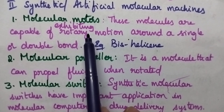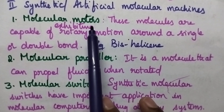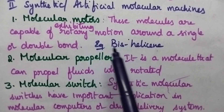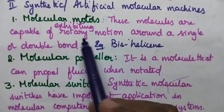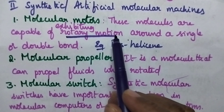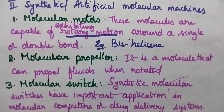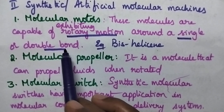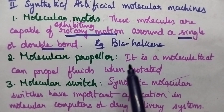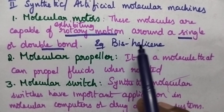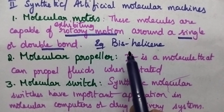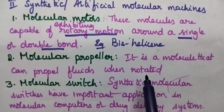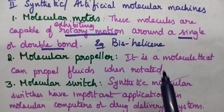Molecular motors are responsible to produce rotatory motion. They exhibit rotational motion around the single or double bond. The best example is bishellicine, which exhibits unidirectional rotatory motion along the double bond.